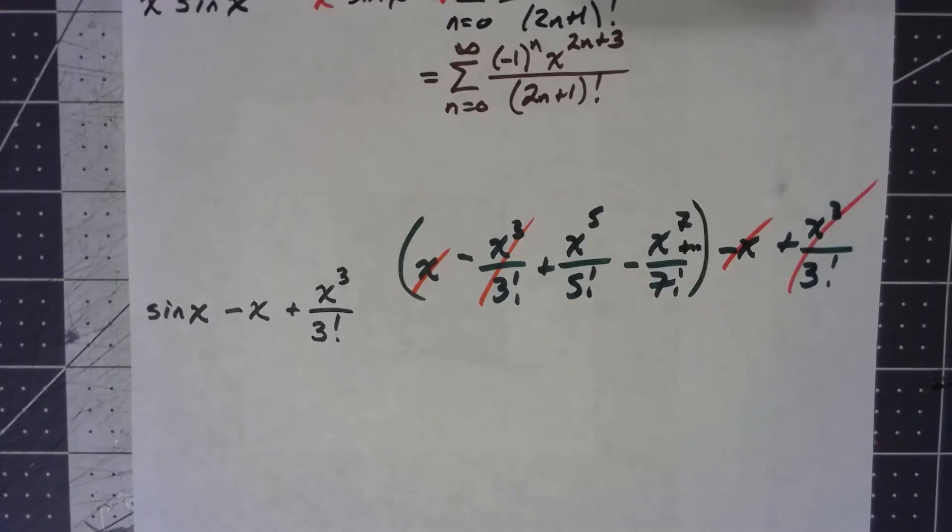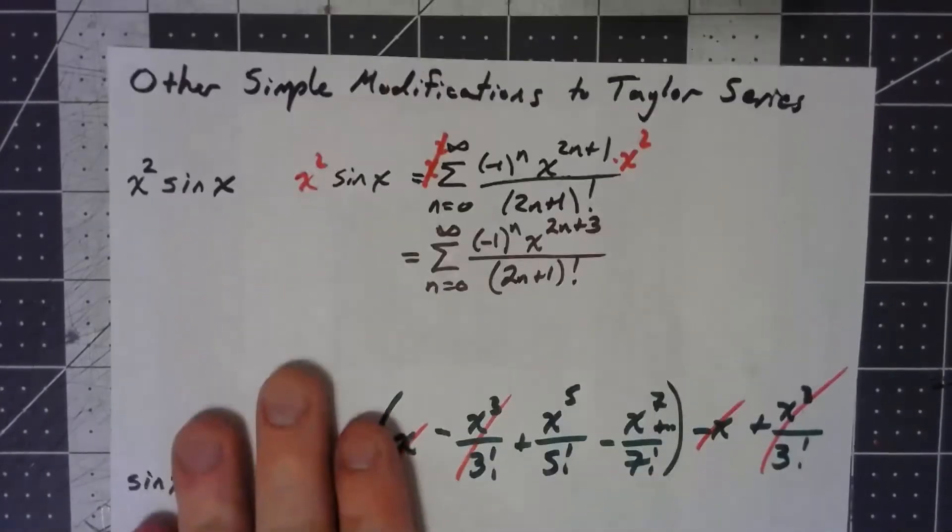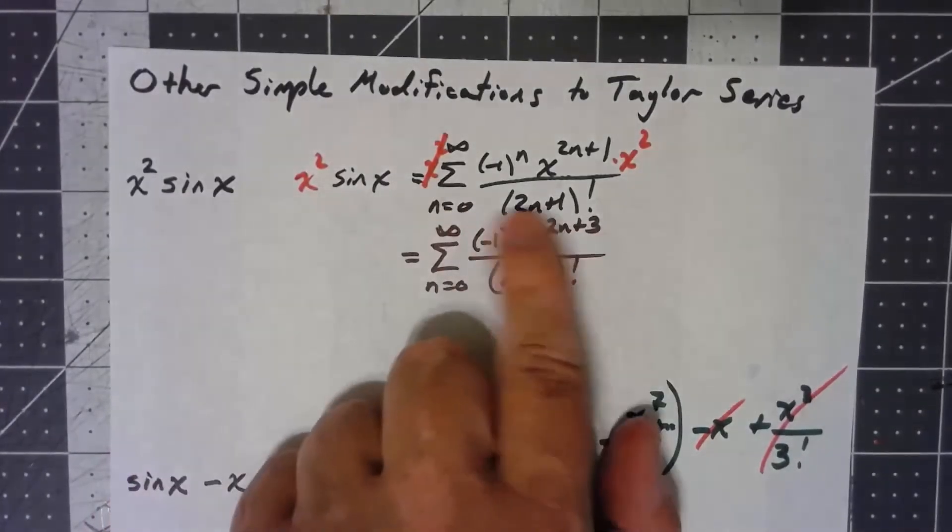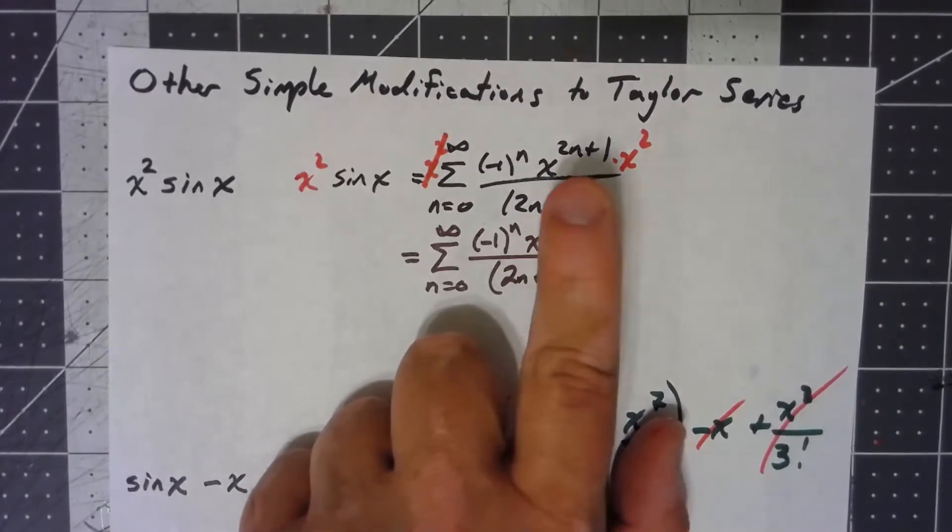So really, all this is done, subtracting the x and adding the x cubed over 3 factorial, that's canceled out my first two terms in this series.